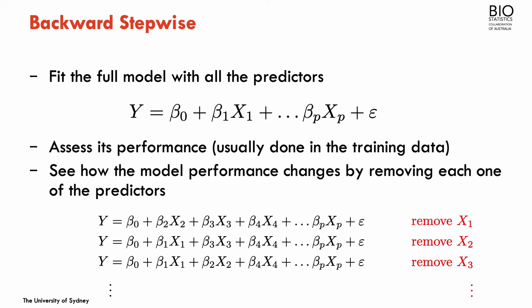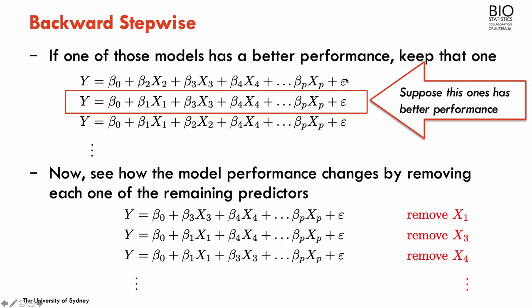Suppose we have a linear model with p potential predictors. The first step of backward selection is to fit the model with all the predictors and assess its performance. Usually we don't use cross-validation here — we use the training data — otherwise we add quite a bit of computation. In the second step, we see how the model performs by removing each predictor at a time: remove x1, assess performance, put x1 back, remove x2, assess, and so on. Suppose that removing x2 gives the best performance — x2 is now removed for the next step.